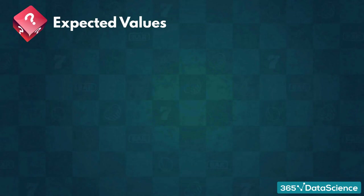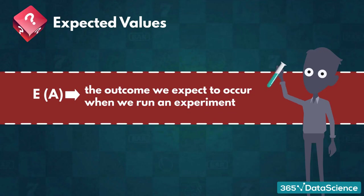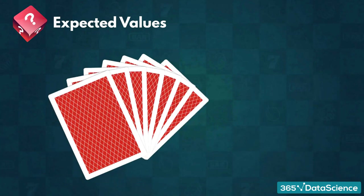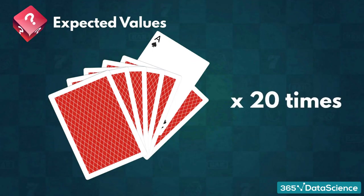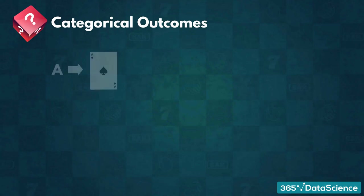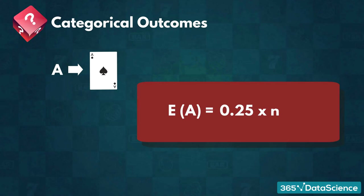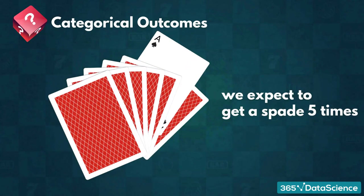The expected value of an event A, denoted E(A), is the outcome we expect to occur when we run an experiment. For an event with categorical outcomes, like suits, we calculate the expected value by multiplying the theoretical probability of the event, P(A), by the number of trials we carried out, N. We already know the true probability of drawing a card from a specific suit is equal to 1/4, or 0.25. If we repeat this action 20 times, the expected value would equal 0.25 times 20, which equals 5. An expected value of 5 means we expect to get a spade 5 times if we run the experiment.